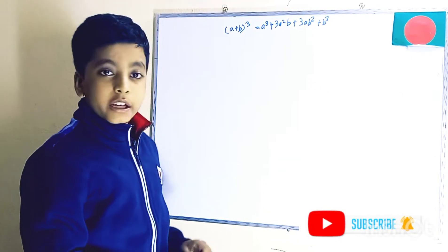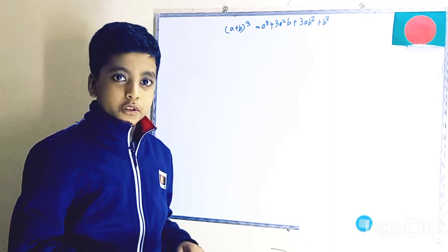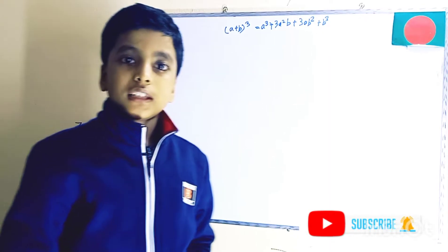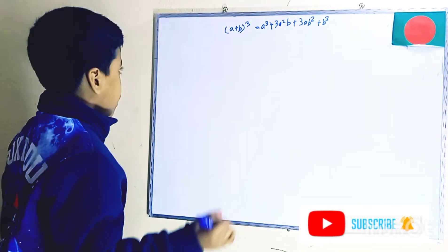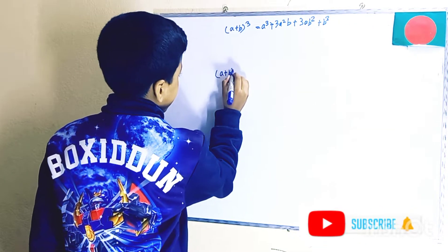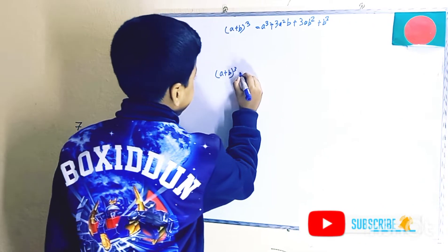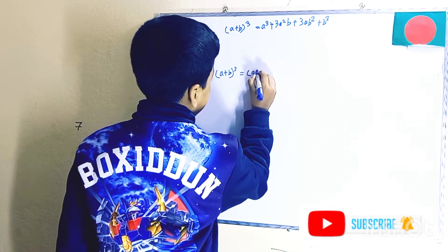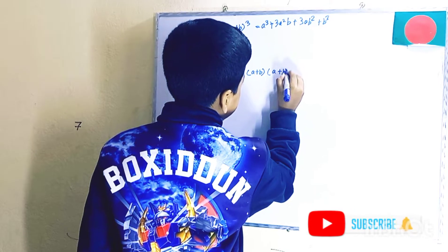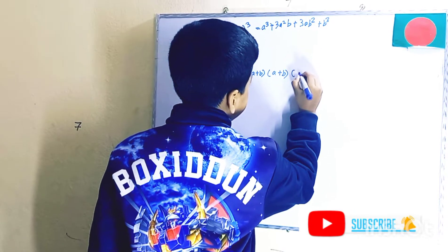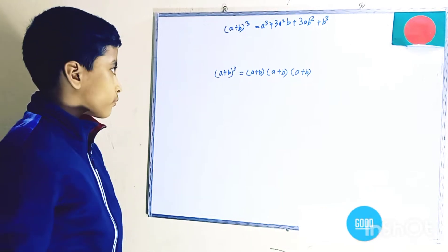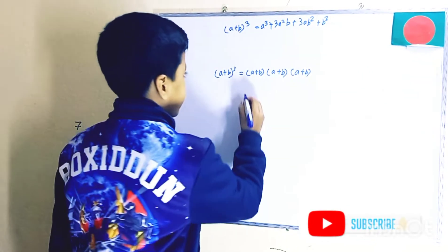So now let's start proving it. First we need to start with A plus B whole cube. We need to actually multiply A plus B three times here — A plus B times A plus B times A plus B.